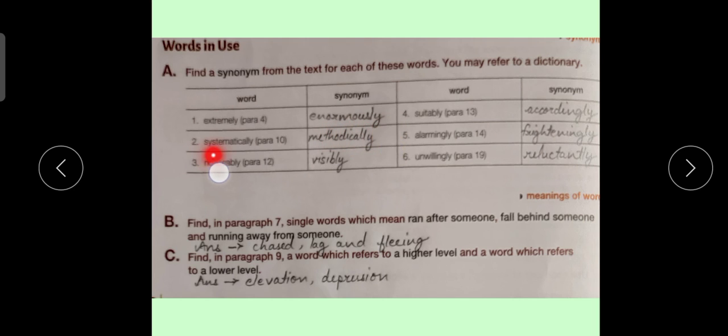Sentence number 2. Systematically, Methodically. Noticeably, Visibly. Number 4. Suitably. Synonym is Accordingly. Number 5. Alarmingly. Synonym Frightingly. Number 6. Unwillingly. Synonym is Reluctantly.